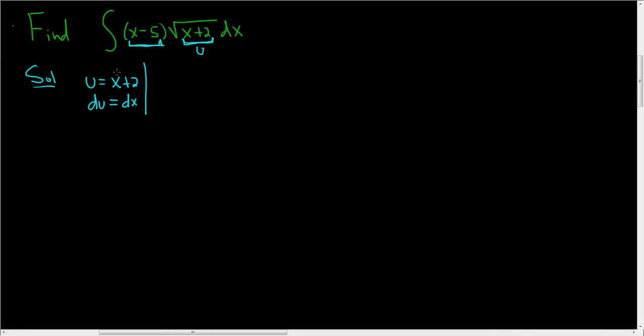So we can resolve that by taking this equation and solving it for x. So x is equal to u minus 2. Just subtracting 2 from both sides would give us u minus 2.